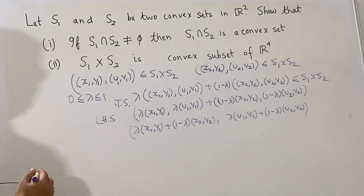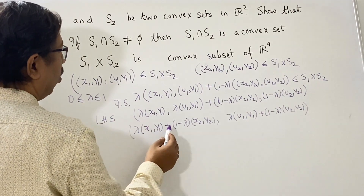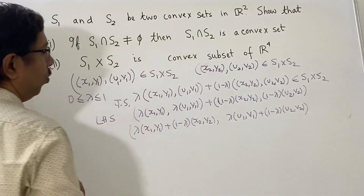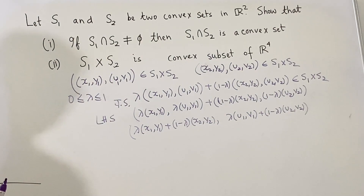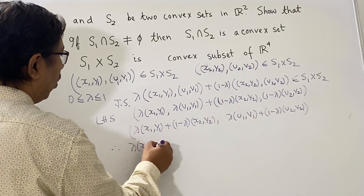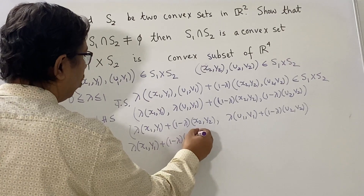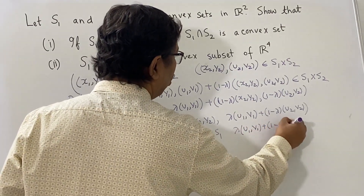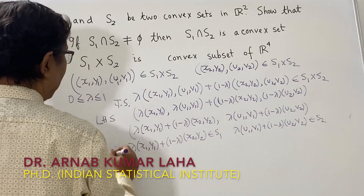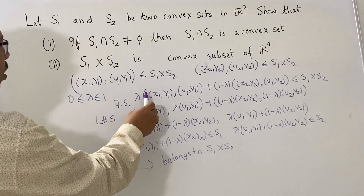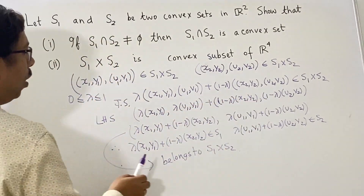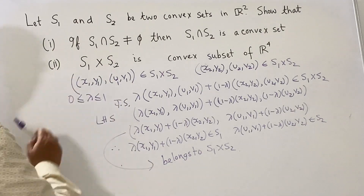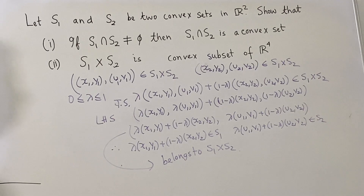Using rules of vector spaces, we see that the above is equal to (lambda·(x1, y1) + (1−lambda)·(x2, y2), lambda·(u1, v1) + (1−lambda)·(u2, v2)). Now we know that both S1 and S2 are convex. So the point lambda·(x1, y1) + (1−lambda)·(x2, y2) belongs to S1, and lambda·(u1, v1) + (1−lambda)·(u2, v2) belongs to S2. Therefore, for any lambda, this combined point belongs to S1 cross S2, meeting the requirement for a convex set. We can claim that S1 cross S2 is a convex subset of R⁴, that is R² cross R².